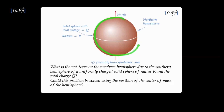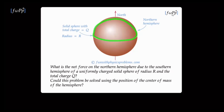This is a solid sphere with total charge q and radius r. If you look at some charge in the northern hemisphere, it is going to be repelled by the charges in the southern hemisphere and also in the northern hemisphere. The query is: what is the net force on the northern hemisphere due to all the charges only in the southern hemisphere? The second part is to think if this problem can be solved using the center of mass concept.